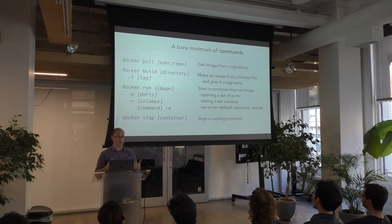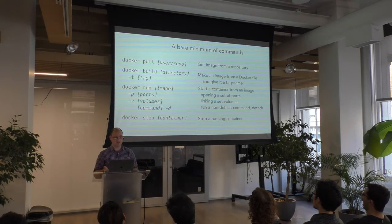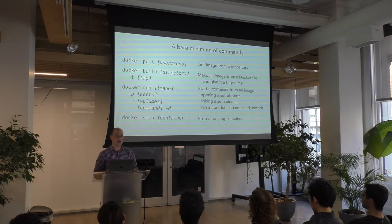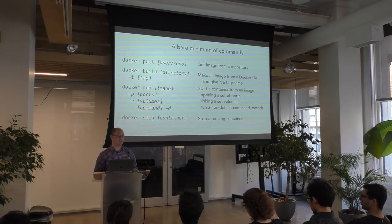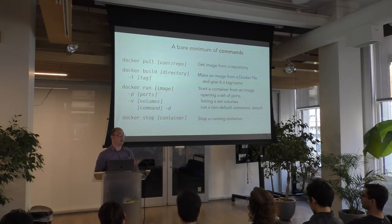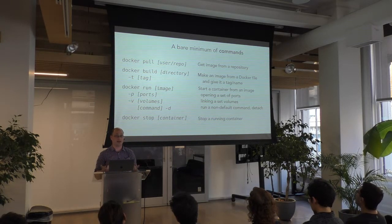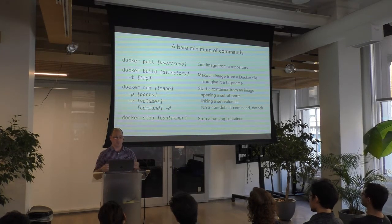When you have an image you can run it. Docker run fires up the container. Because the container is an isolated environment, you usually have to specify how you want to get data in and out and how you want to communicate with it — typically via network ports or shared volumes between your machine and the isolated container. You can specify what command you want to run on the image, or it'll use a default one. You may also choose to detach and run the container in the background, or run it in the foreground.